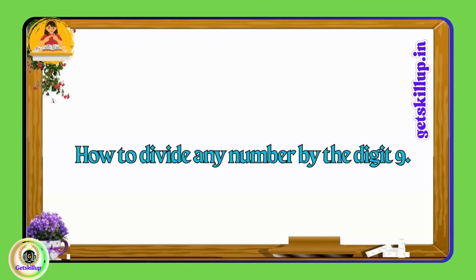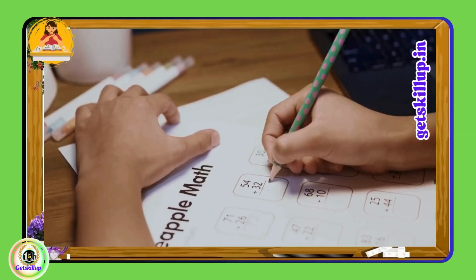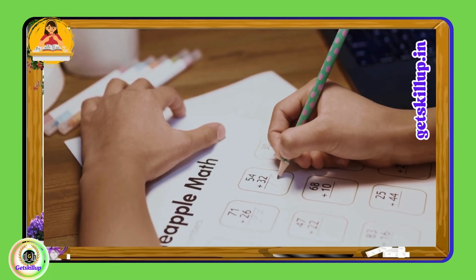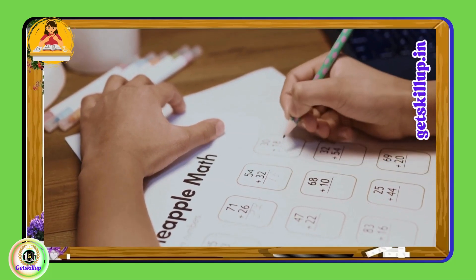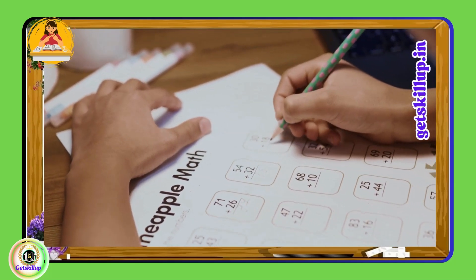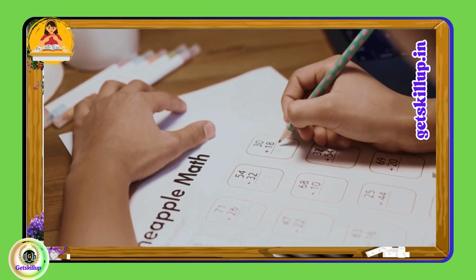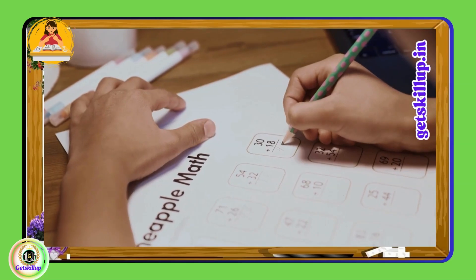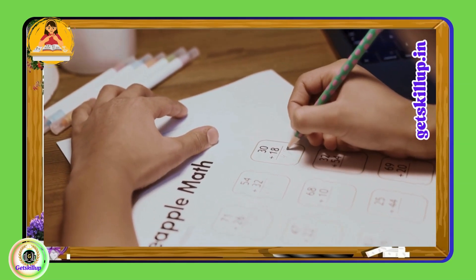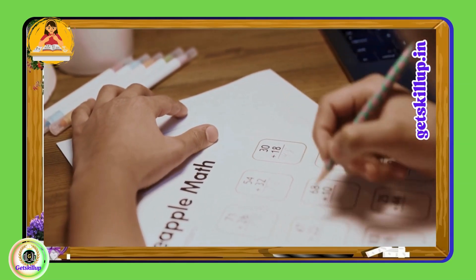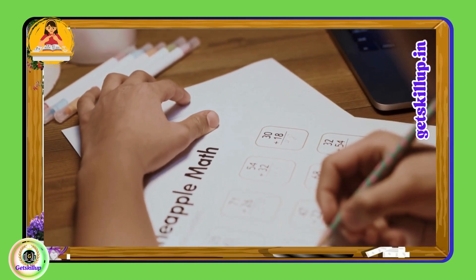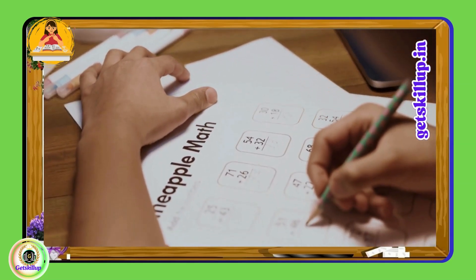We will explain how to perform division with numbers divisible by nine. You will be able to tackle such divisions in just seconds. Let me walk you through the process. First, let's discuss division by the single digit number nine.